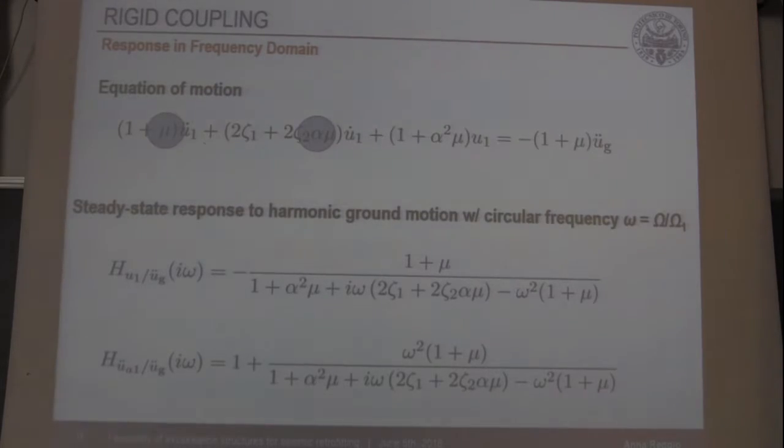Starting from the case of rigid coupling, the governing parameters reduce further to two: mass ratio and frequency ratio. We have carried out parametric analysis in order to assess the effectiveness of the exoskeleton in reducing the response of the main structure. These analyses have been conducted in frequency domain so we have considered the frequency response function of the main structure in terms of displacement relative to ground and absolute acceleration.